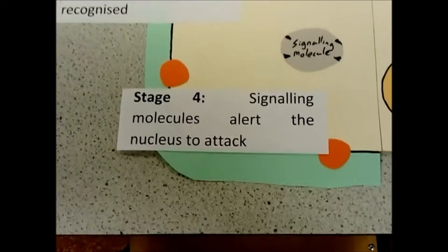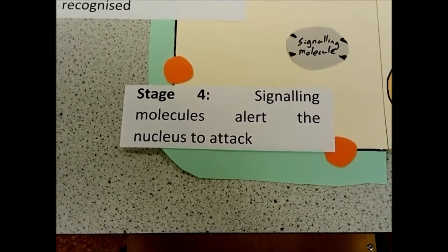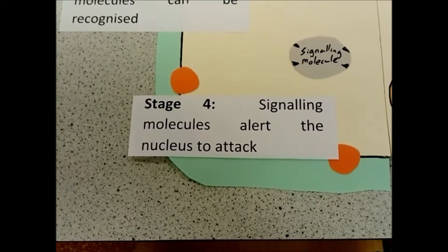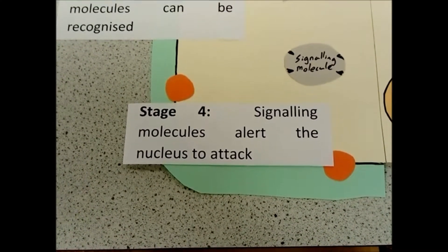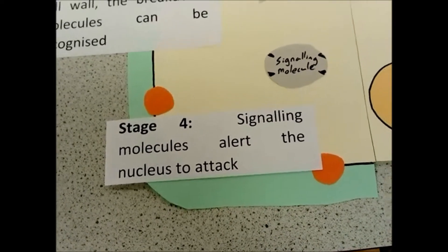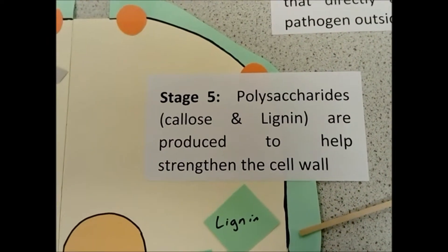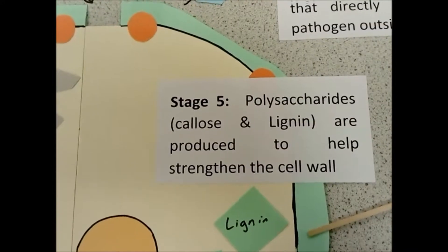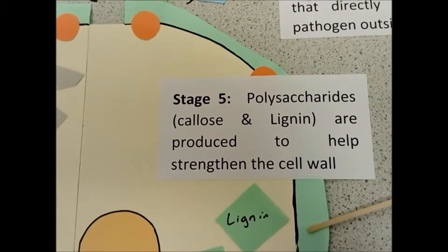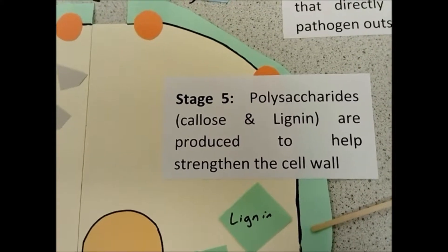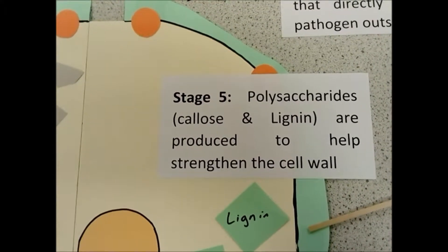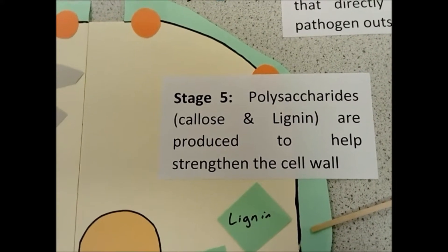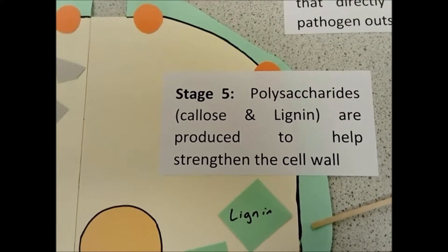This causes signaling molecules in the plant cell to alert the nucleus to the fact that the cell has been infected. This causes an increase in the transcription and messenger RNA for the gene that codes for callose and lignin. Callose and lignin are two chemicals that are used to strengthen the cell wall.